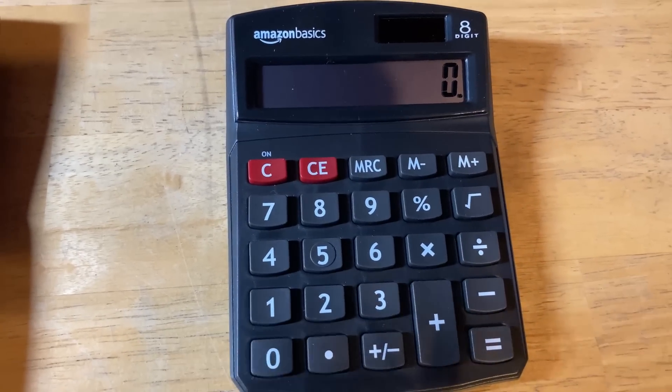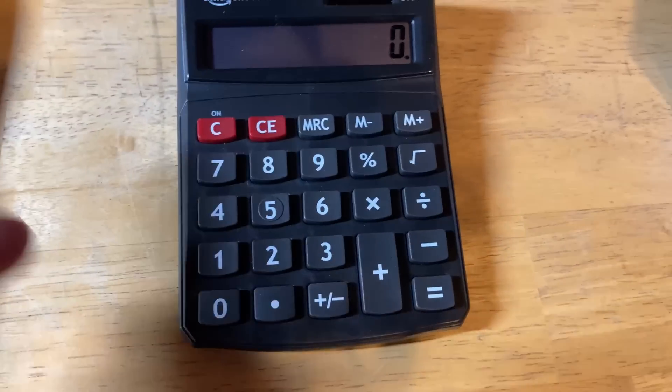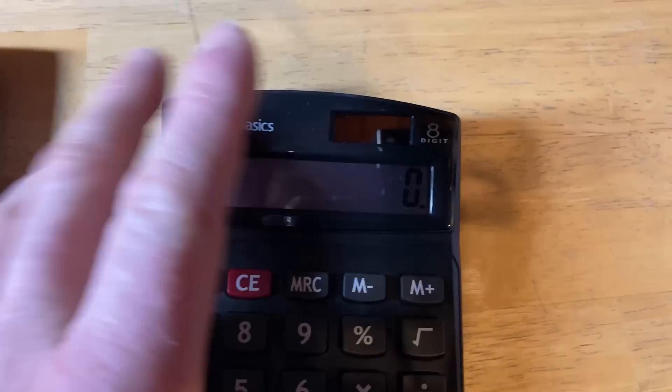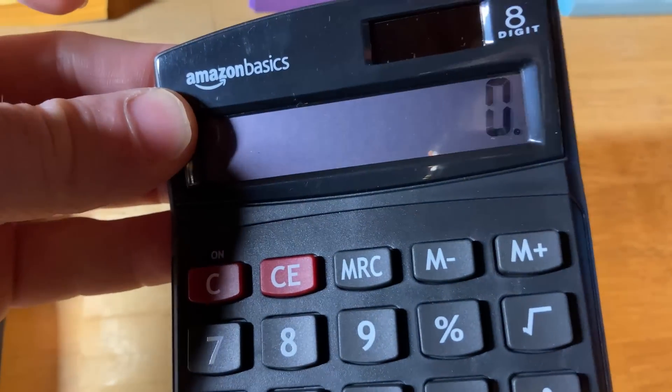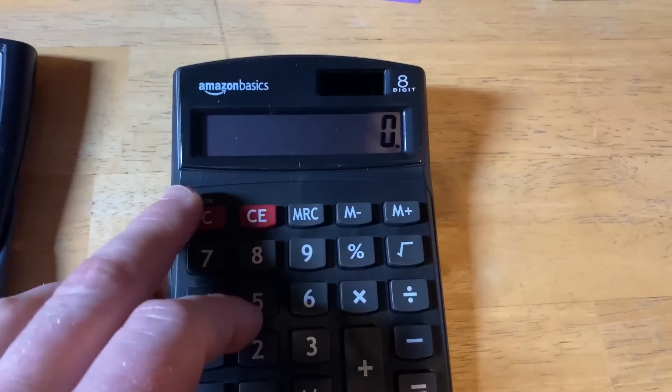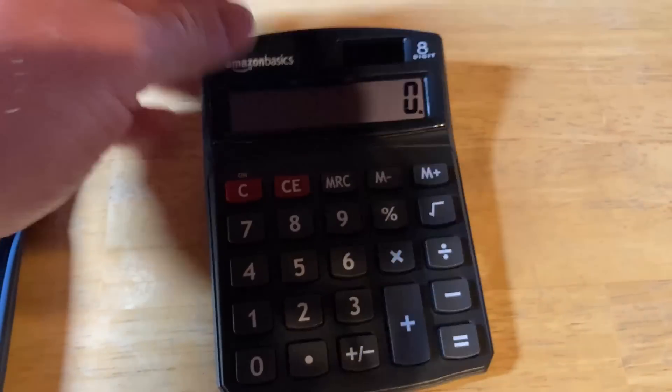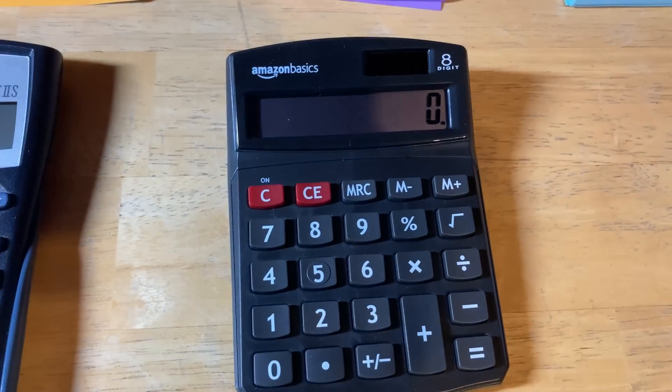I almost didn't include this calculator, but this is a super basic calculator. It's just very basic. It's by Amazon Basics. It's solar-powered, so you don't have to worry about running out of electricity, which is really useful. You can always power it with the sun. So just an easy, basic calculator. Not much functionality, but quite affordable.